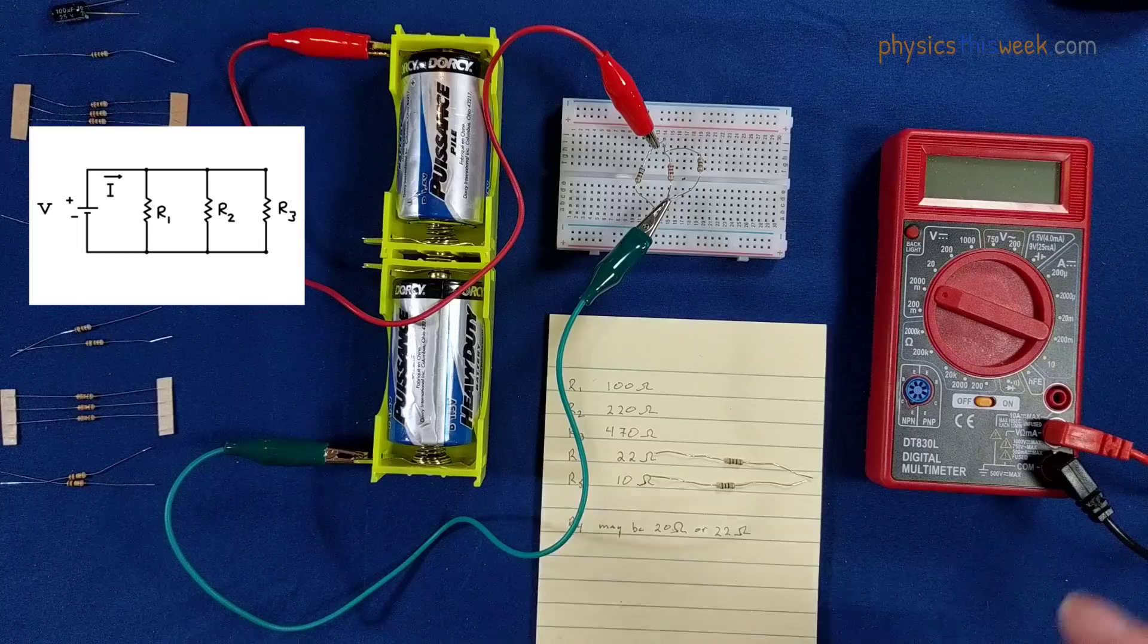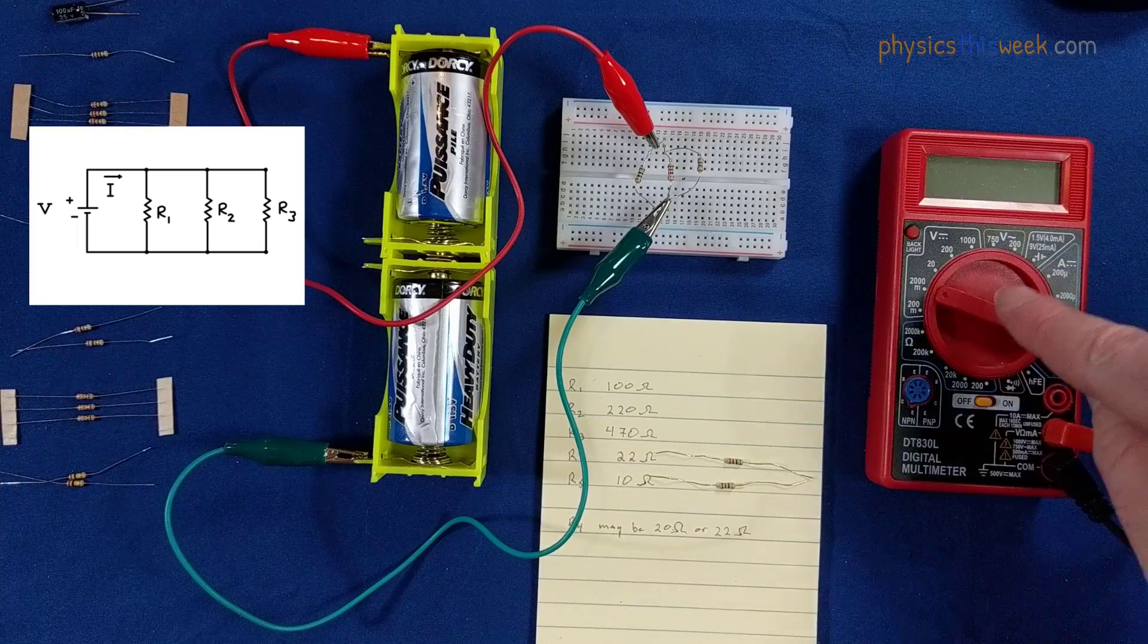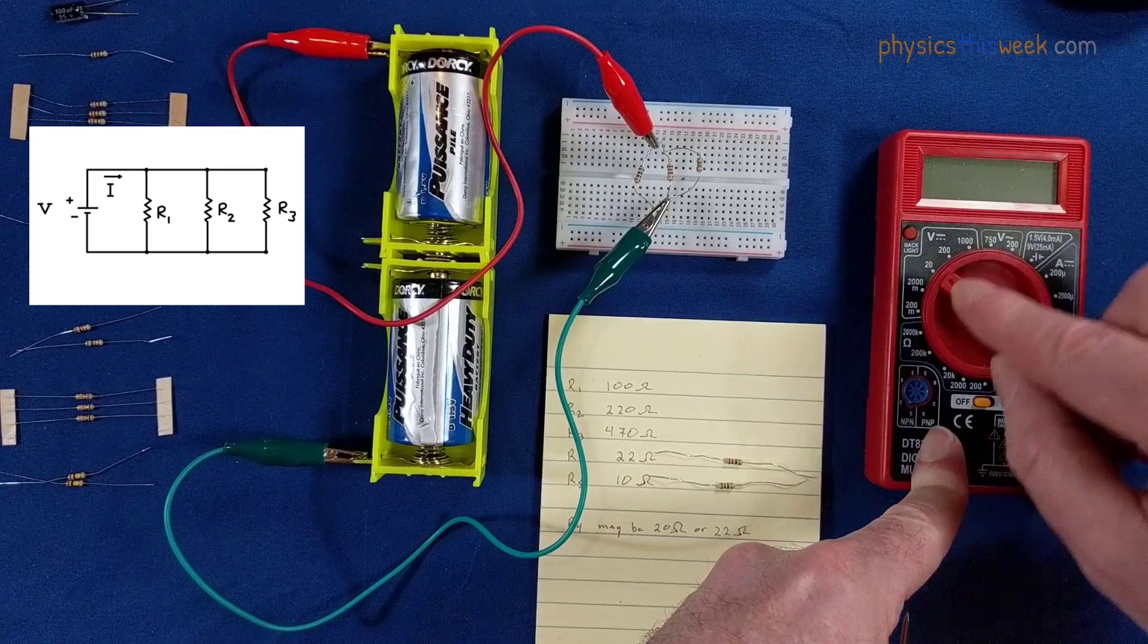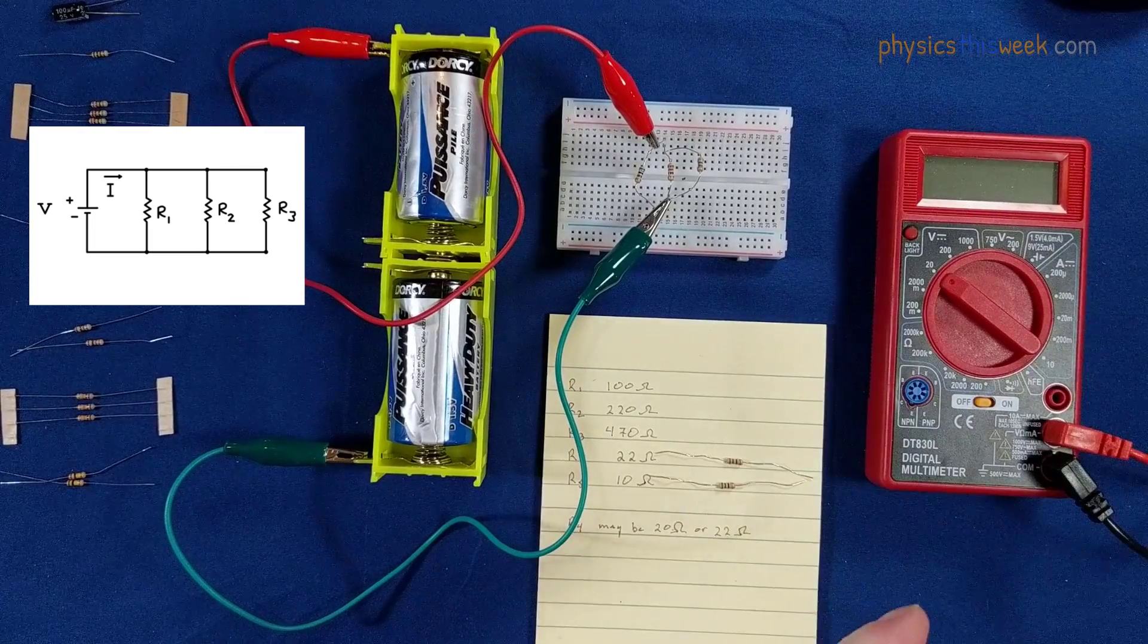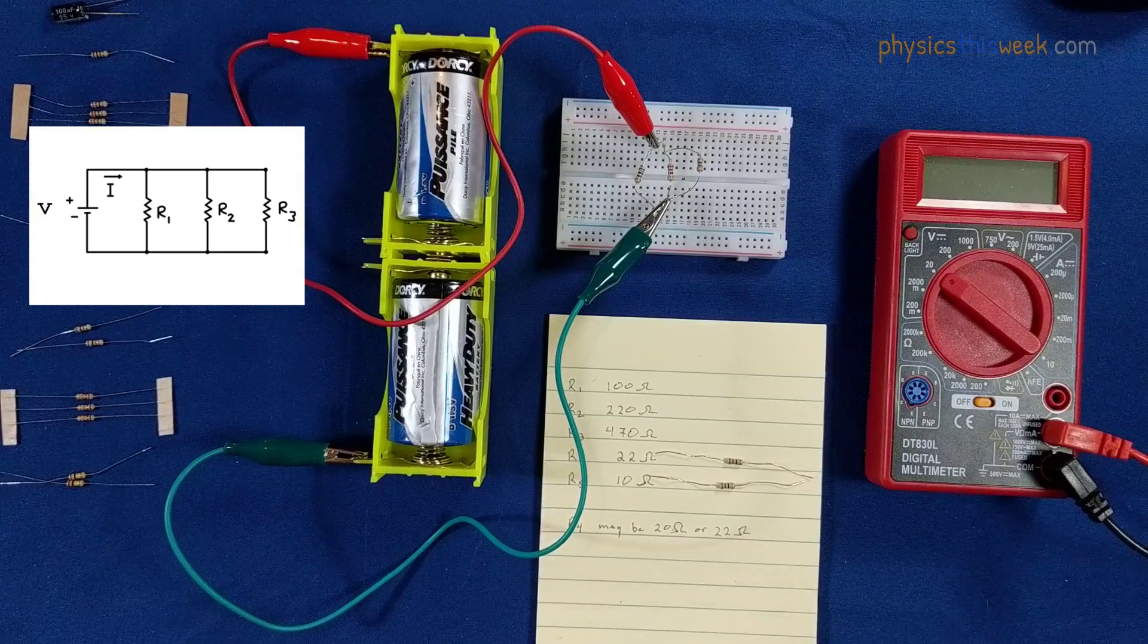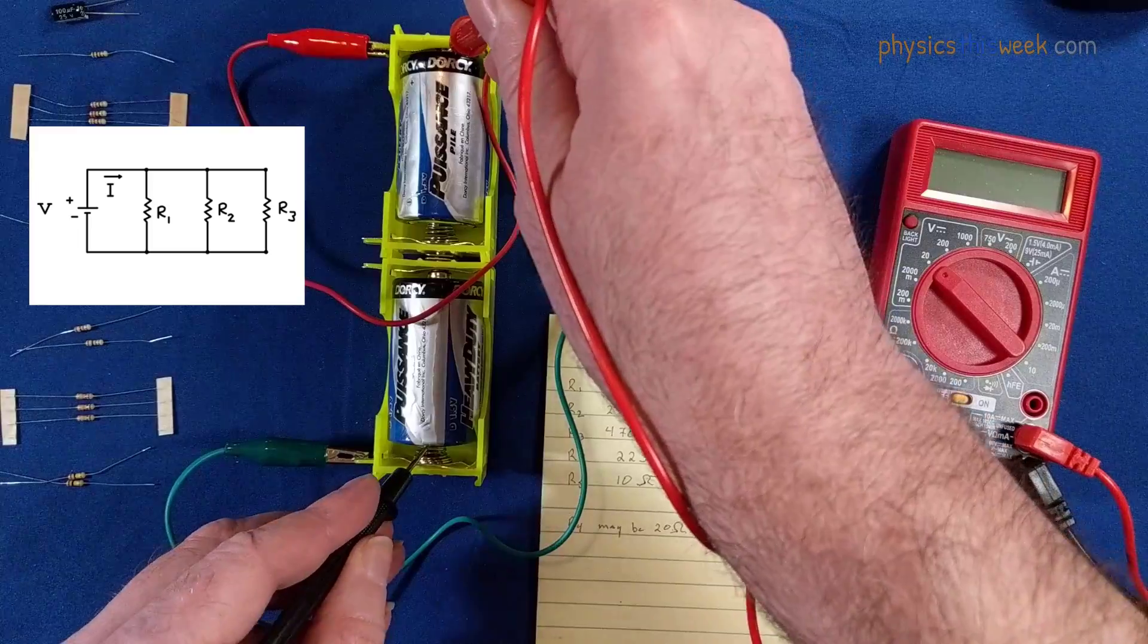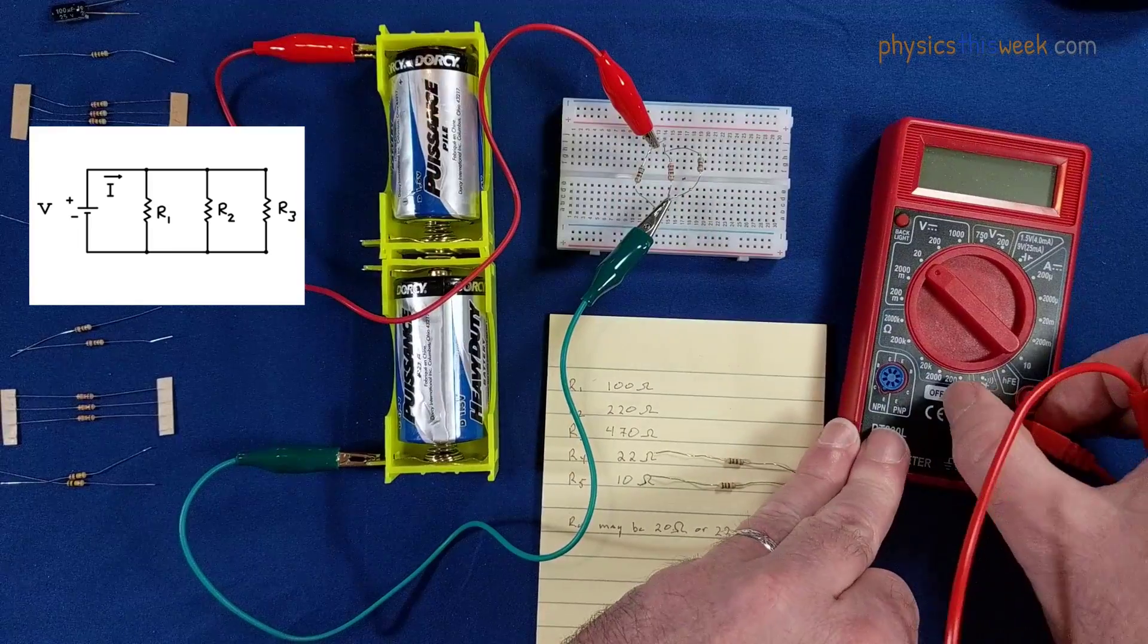We're now set up to measure the voltage across each of these. I'm going to set my voltmeter to 20 to start out. I'm going to measure across the battery. Make sure you turn it on.